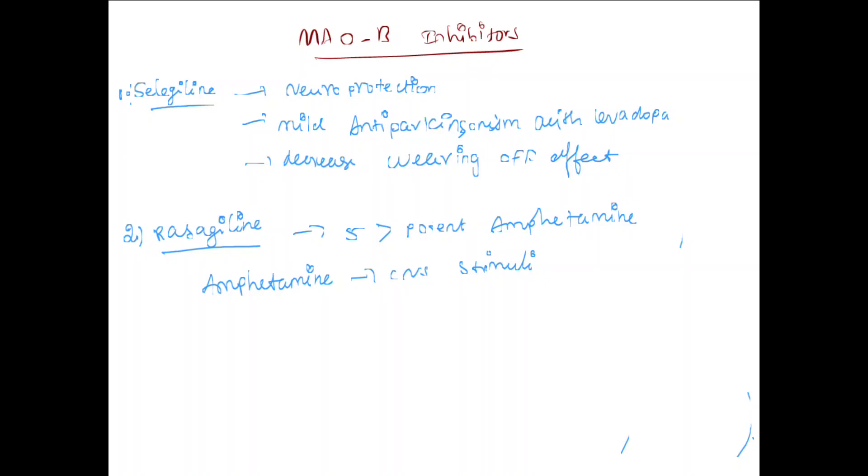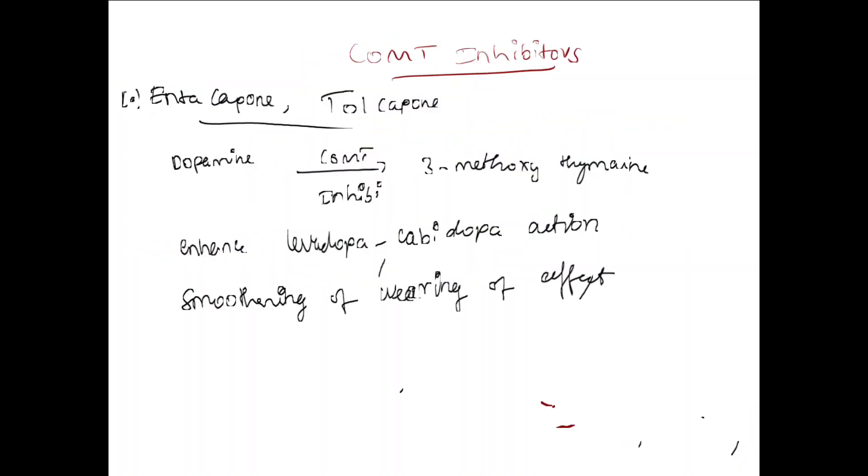Amantadine is a CNS stimulant. COMT inhibitors include entacapone and tolcapone. These enhance levodopa-carbidopa actions and their main function is smoothening the wearing-off effect.